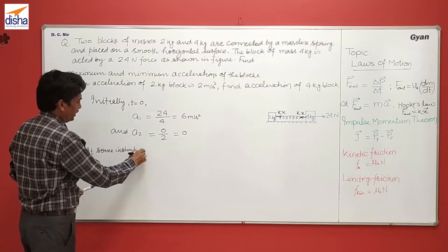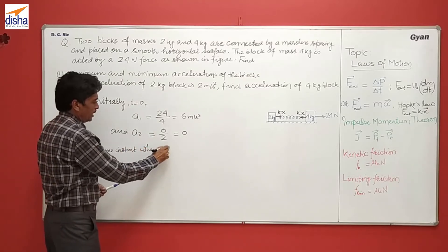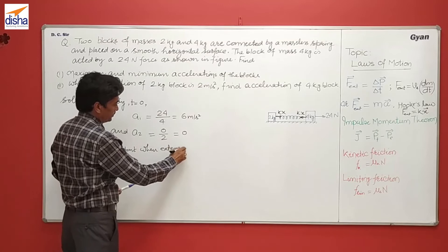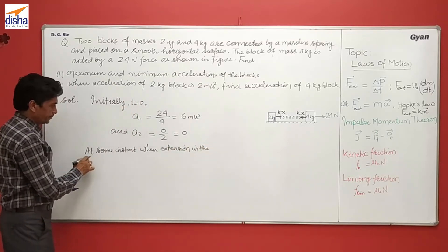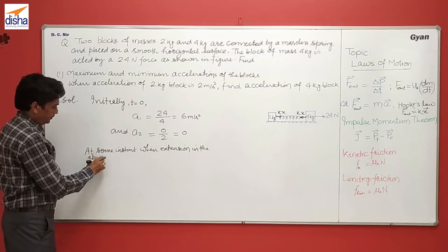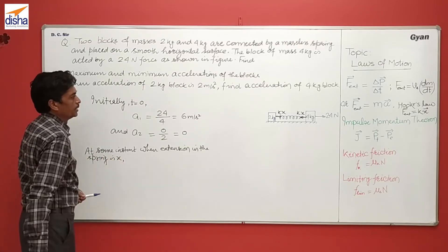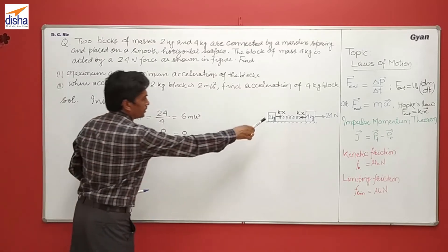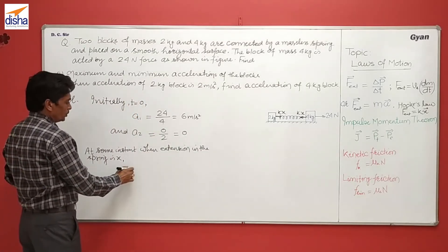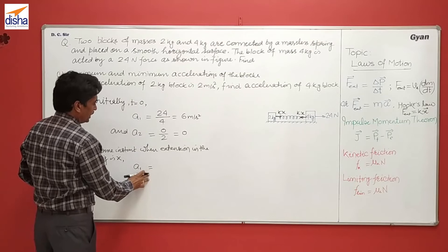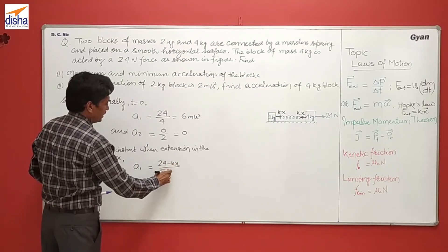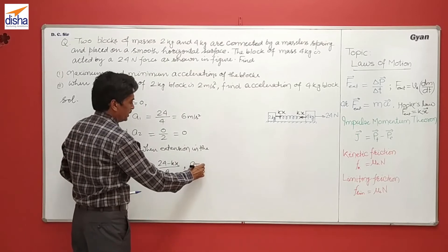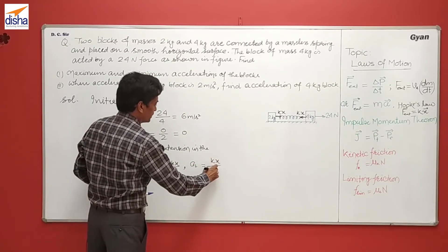When extension in the spring is x, the net force on 4 kg, so its acceleration becomes a₁ equals 24 minus kx divided by its mass, and that of the 2 kg will be kx divided by its mass.